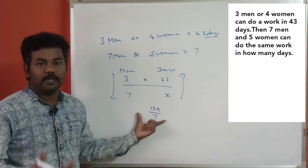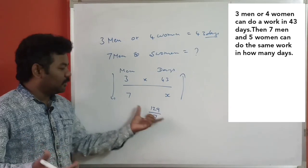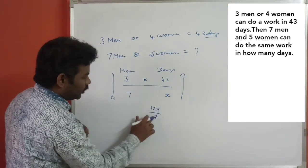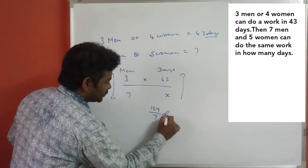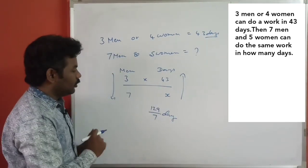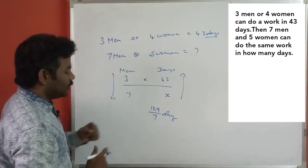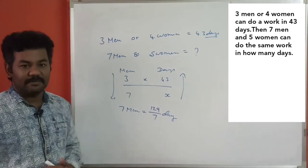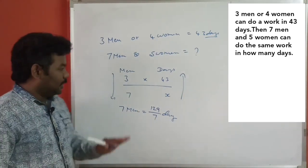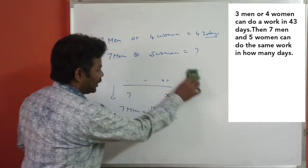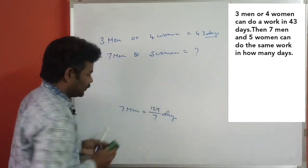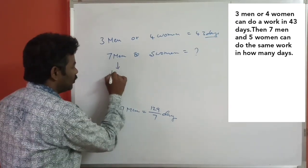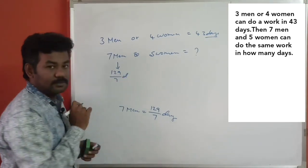You can solve and calculate the time. The fraction will be updated — cancel the maximum. The value of x for 7 men is 129 divided by 7 days.